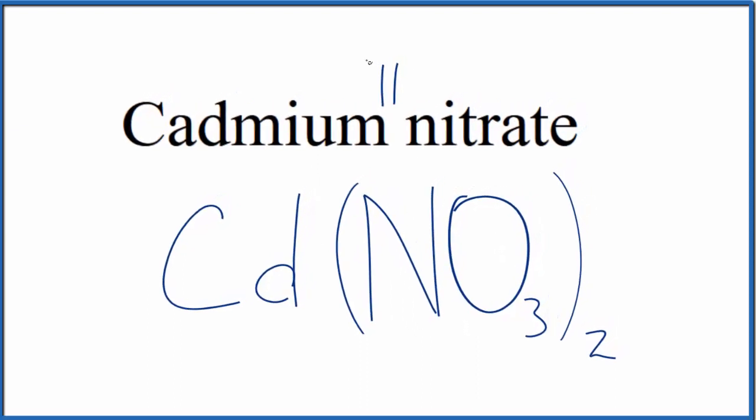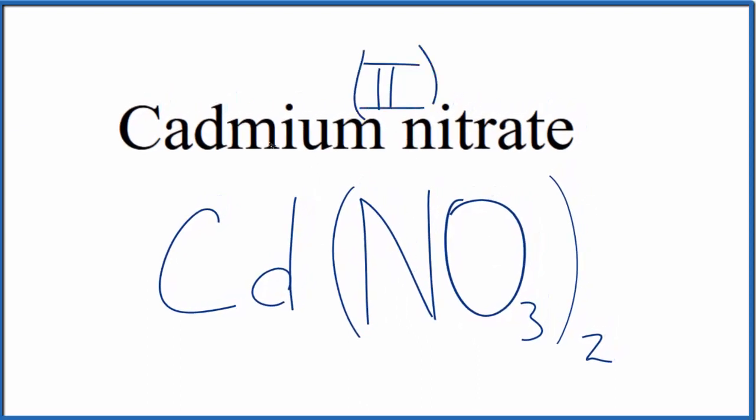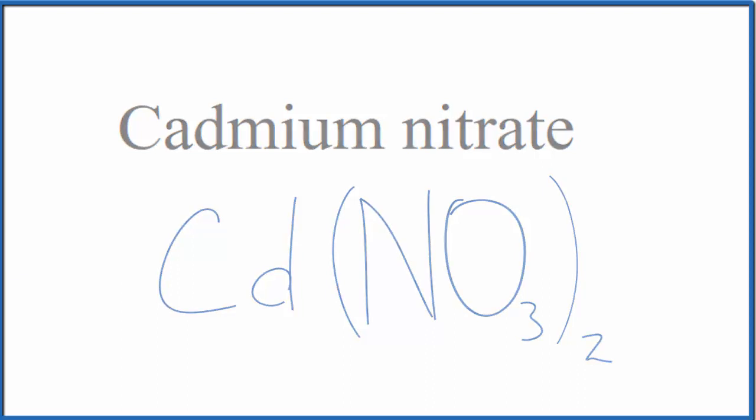Sometimes you'll see a roman numeral II put between the names because this is a transition metal. Cadmium is a transition metal. That's because the cadmium is 2 plus. But since the cadmium is almost always 2 plus, often you won't see this written. This is Dr. B with the formula for cadmium nitrate. Thanks for watching.